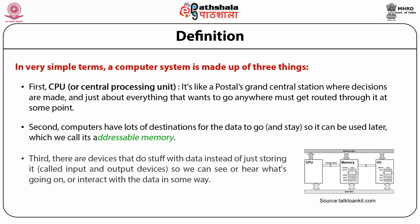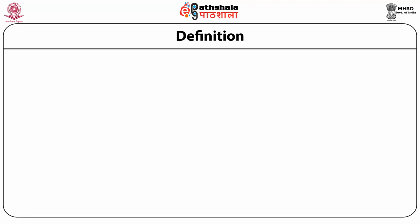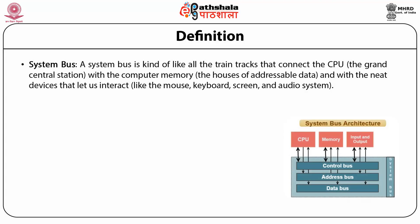Third, there are devices that do things with data instead of just storing it — called input and output devices — so we can see or hear what's going on or interact with data in some way. The system bus is like train tracks that connect the CPU with computer memory and input/output devices.